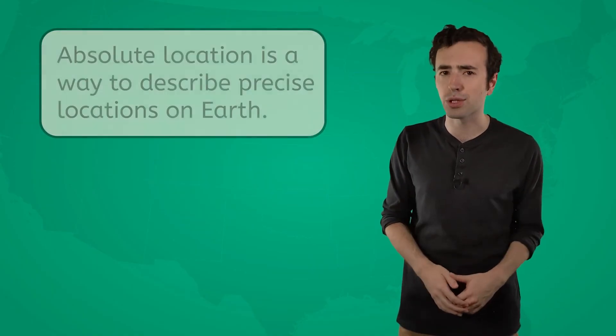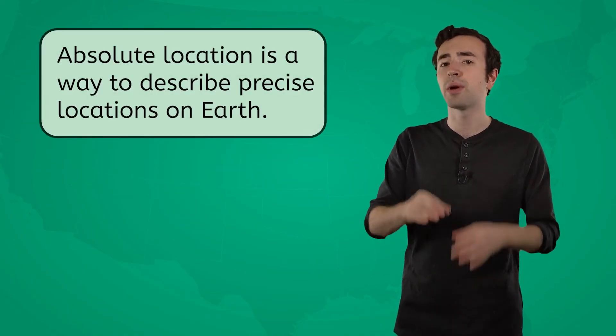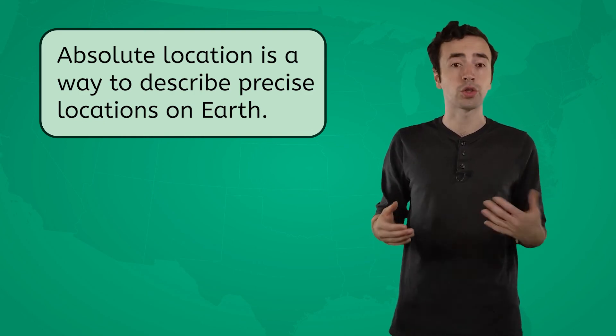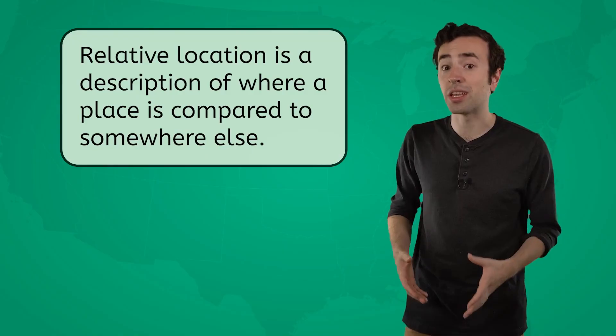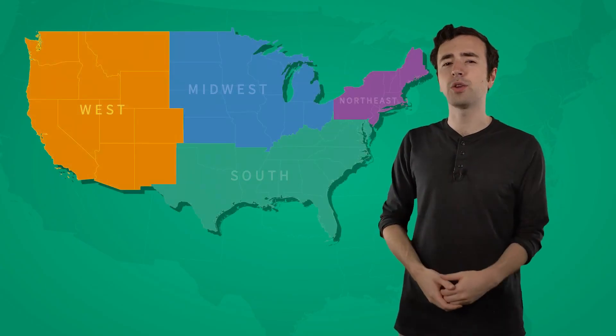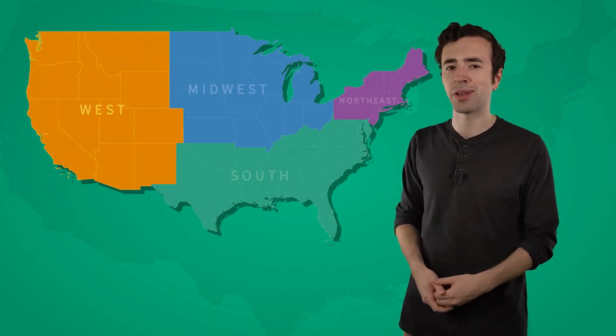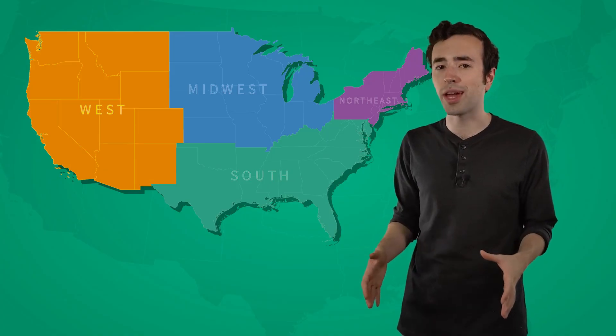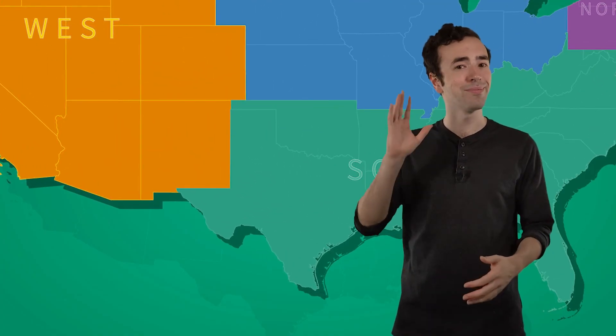Now you know that absolute location is a way to describe precise locations on Earth. We can describe absolute location using latitude and longitude, but we most often use street names and addresses. You also now know that relative location is a description of where a place is compared to somewhere else — we describe where things are using words like east, west, close to, or near. It's time to move on to our next region for Operation Exploration. Have fun practicing more with location, and I'll see you in the South! Bye-bye!